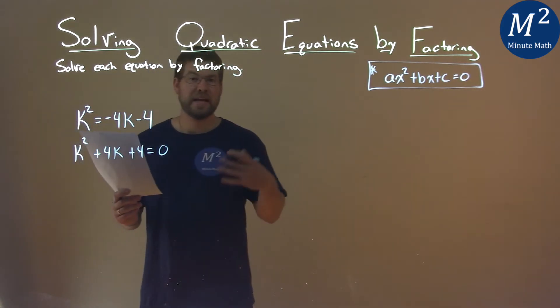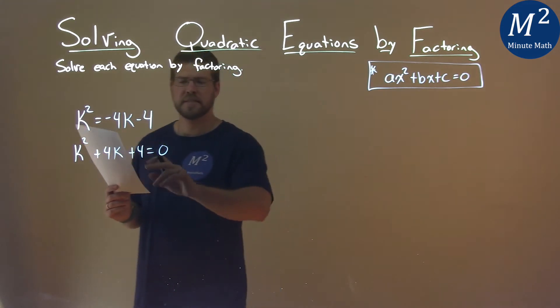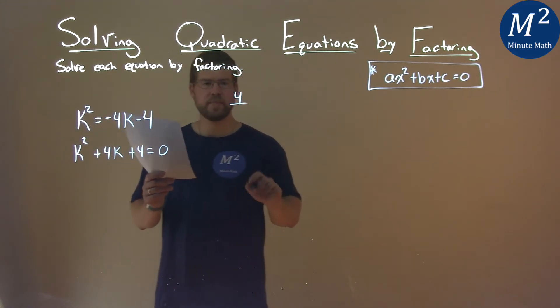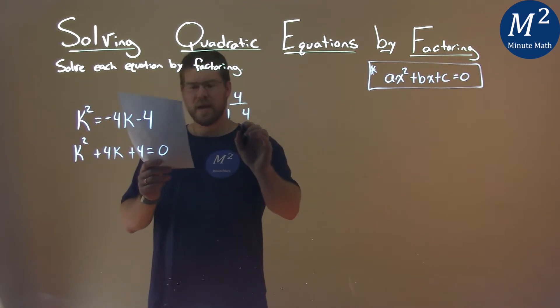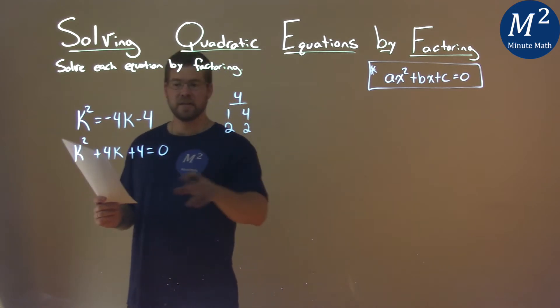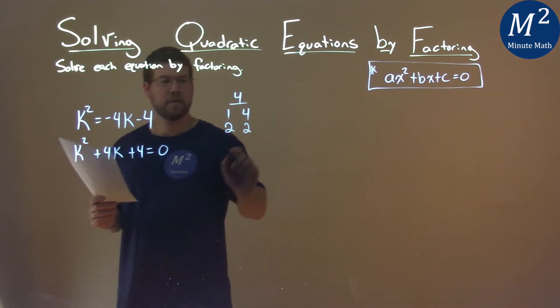So now I have a quadratic that I need to factor. I look at my c value, 4. What two numbers multiply to be 4? That's 1 and 4, and 2 and 2. So of these pairs, which ones add to be a positive 4?